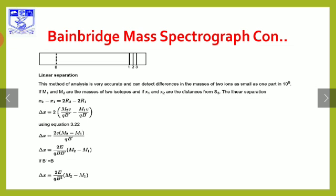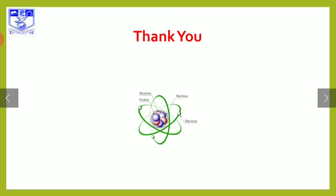This was the Thompson mass spectrometer, Aston mass spectrometer, and Bainbridge mass spectrometer. Topics covered include isotopes and nuclear physics. Thank you for your kind attention.